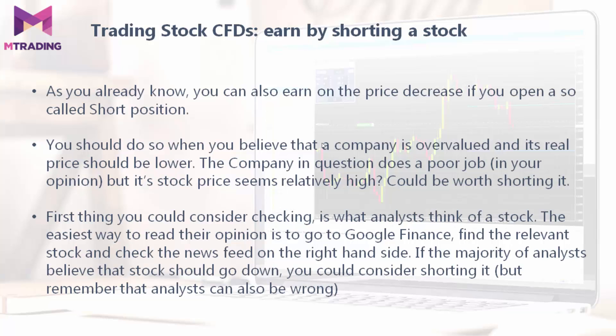The first thing you could consider is checking what analysts think of a stock. The easiest way to read their opinion is to go to Google Finance, find the relevant stock, and check the news feed on the right-hand side. If the majority of analysts believe that the stock should go down, you could consider shorting it.